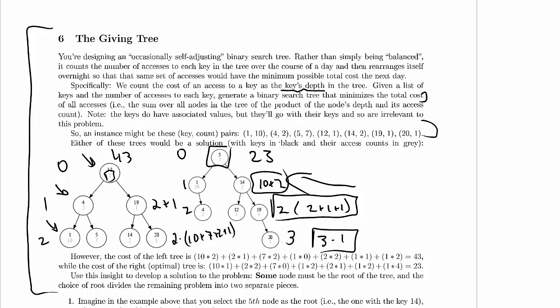Some node must be the root of the tree, and the choice of root divides the remaining problem into two separate pieces. So if we look back at our instance and we think about how that insight applies, some node in that list has to be the root of the binary search tree. Let's go with the one that turned out to be the optimal choice, maybe it's 5. Once we've chosen 5 as the root, where does a node that's got a key like 1 have to go?